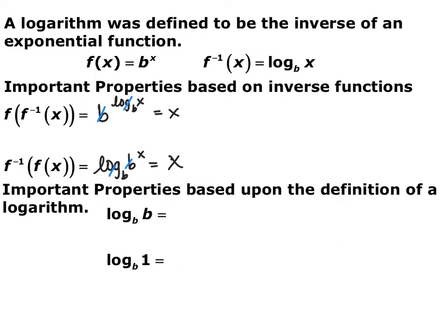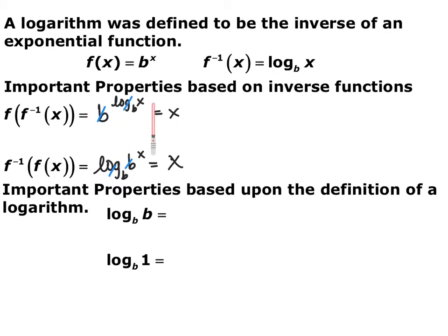Knowing that these are inverse functions — f(x) = b^x and f⁻¹(x) = log base b of x — composing f with f inverse gives b to the power of log base b of x, which must equal x. So b to the log base b cancel, similar to a square root of x squared. Going the other direction, log base b of b to the x also equals x, so log base b and b cancel. Whenever you have a base and an exponent with a log of the same base, those cancel and you're left with whatever is inside the logarithm.